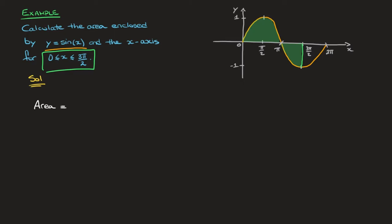The area is equal to the integral from 0 to 3 pi over 2 of the absolute value of sine of x. When calculating an enclosed area, this absolute value is very important. The shaded area comes in two parts: one area above the x-axis, which is a positive area, and one below the x-axis, which is a negative area. To prevent positive and negative areas from cancelling each other out, we apply this absolute value, which turns any negative area into a positive area.